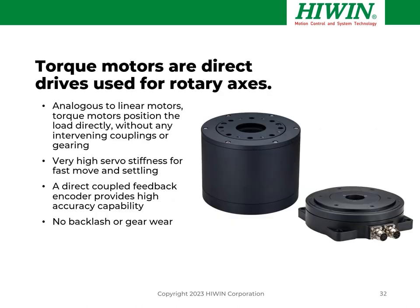What about rotation? Sometimes we need rotation rather than linear motion. Torque motors are often used in this case — a type of direct drive employed in rotary stages and rotary positioning tables. Analogous to linear motors, the torque motor positions the load directly without any intervening couplings or gearing, giving very high servo stiffness, fast moves, smooth scanning, direct-coupled feedback encoder for high-accuracy capability, no backlash or gear wear for very long life, and direct drive with direct measurement — the best possible combination.